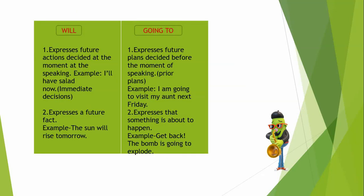Now let's look at the difference between will and going to. Will expresses future actions decided at the moment of speaking — an immediate decision. Example: 'I will have salad now.' This is a quick, immediate decision not planned before. For immediate decisions taken at the time of speaking, we use will plus V1 form of the verb. Going to, on the other hand, expresses future plans decided before the moment of speaking — these are prior plans.